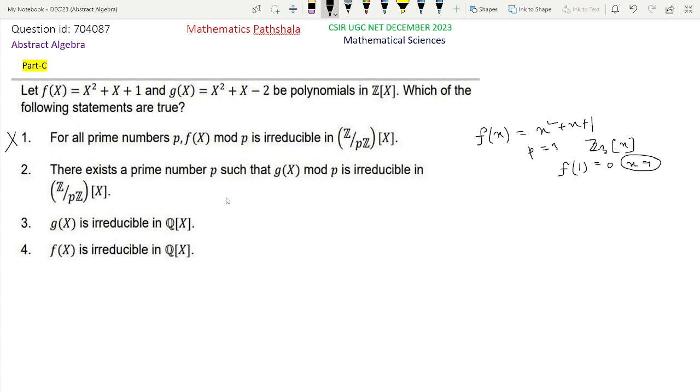Now look at option 2. There exists a prime number p such that g(x) mod p is irreducible in Z/pZ[x], that is Zp[x]. Also, if we take any prime number p and consider the polynomial ring Zp[x].